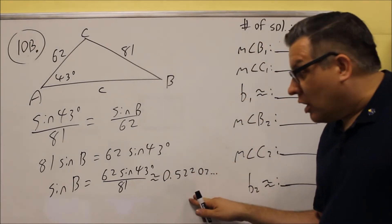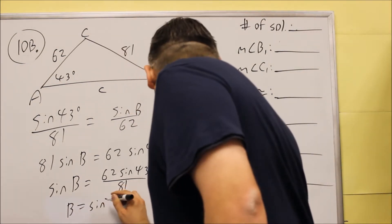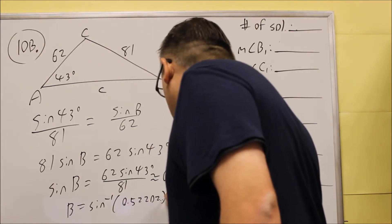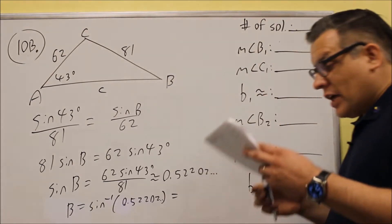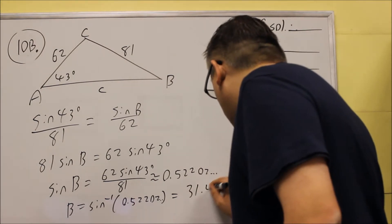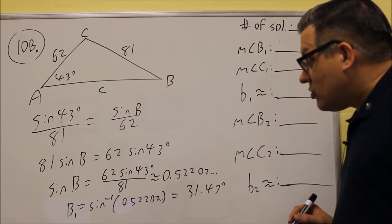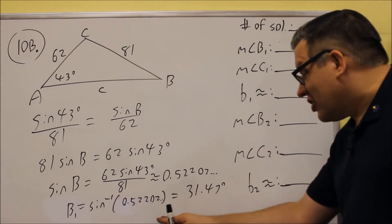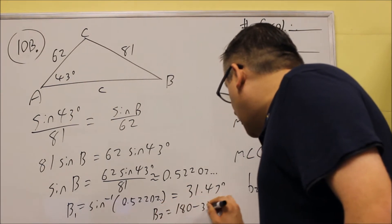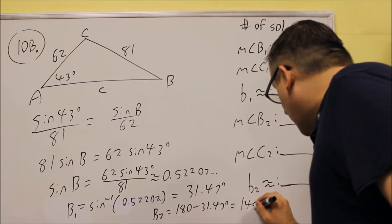Remember, in order to get B you have to take the inverse of that. So B equals the inverse sine of .52202, which gives you approximately 31.47. That's your B1. Your B2 is always going to be 180 minus this angle, so B2 equals 180 minus 31.47, which gives 148.53.